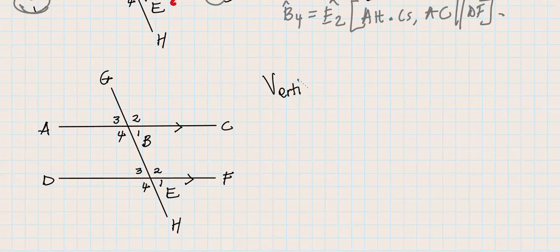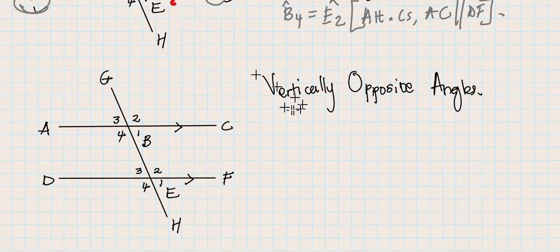Let's use a proper pen. This is much better. Vertically opposite angles. For vertically opposite angles, please make sure you underline, vertically opposite angles. We only have one aspect.